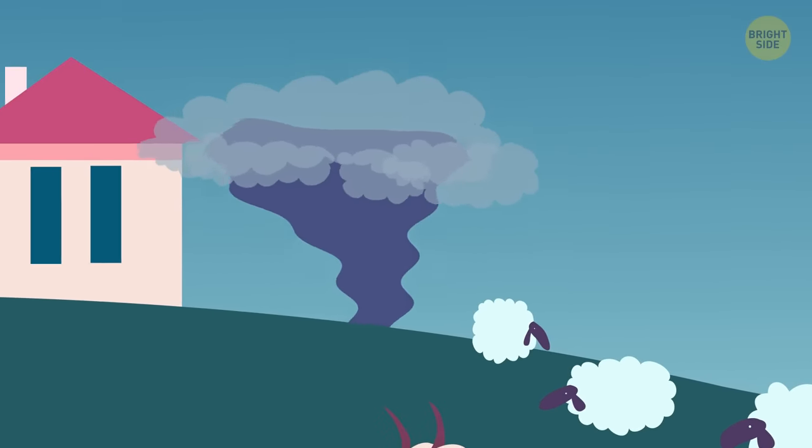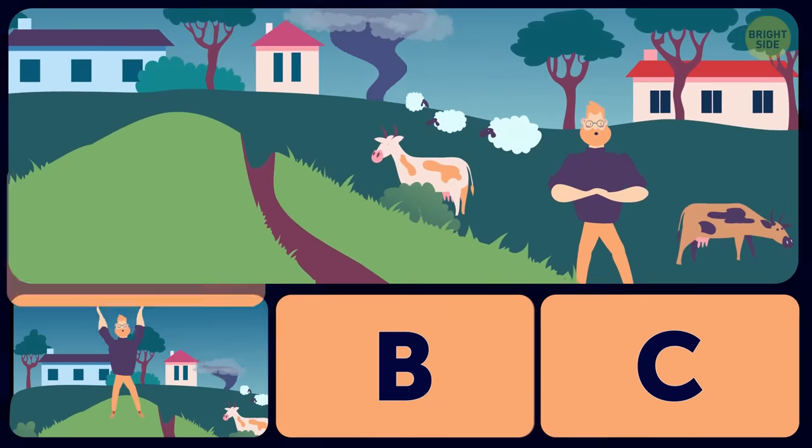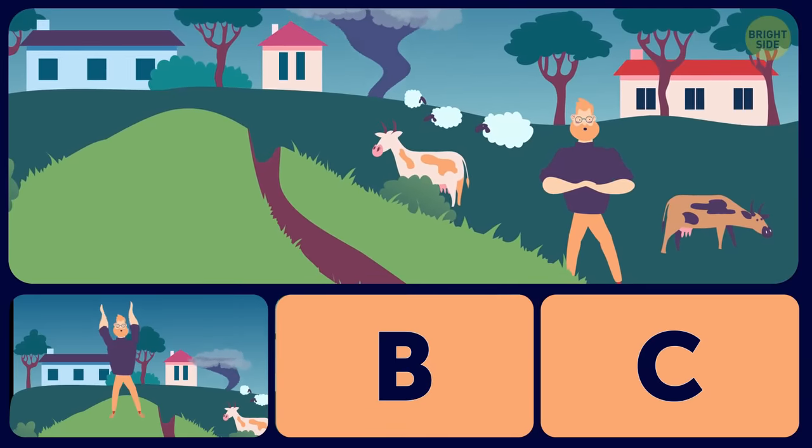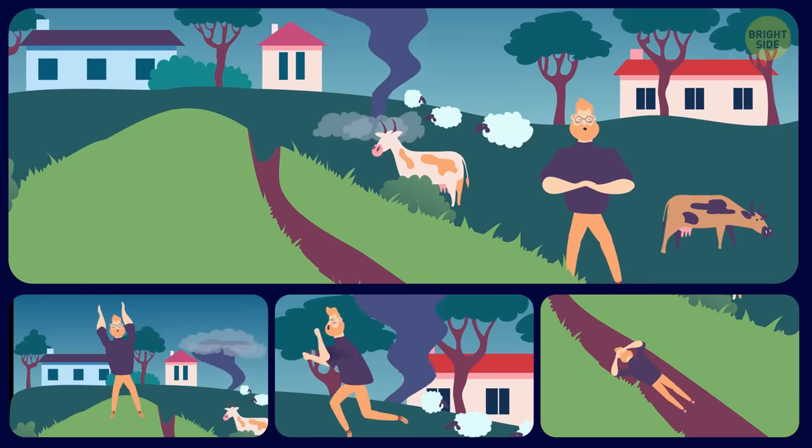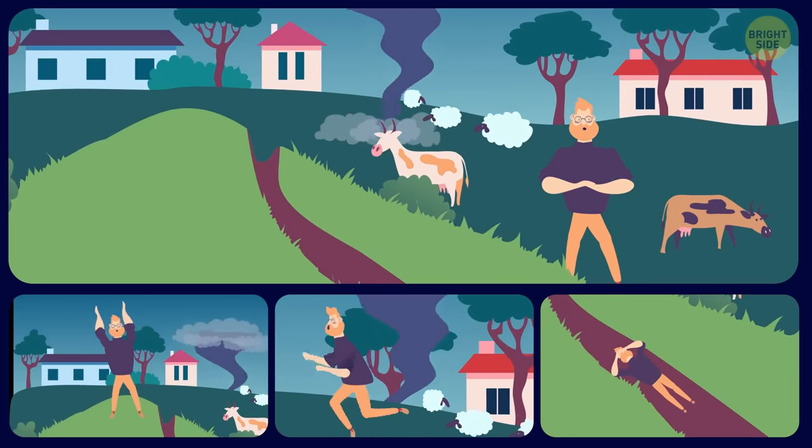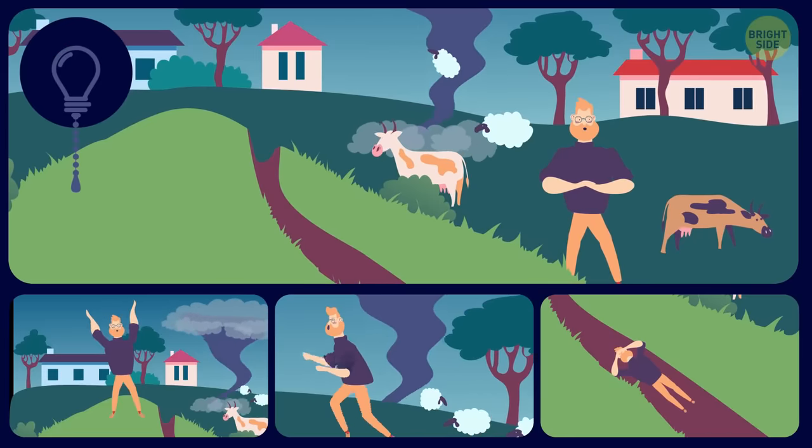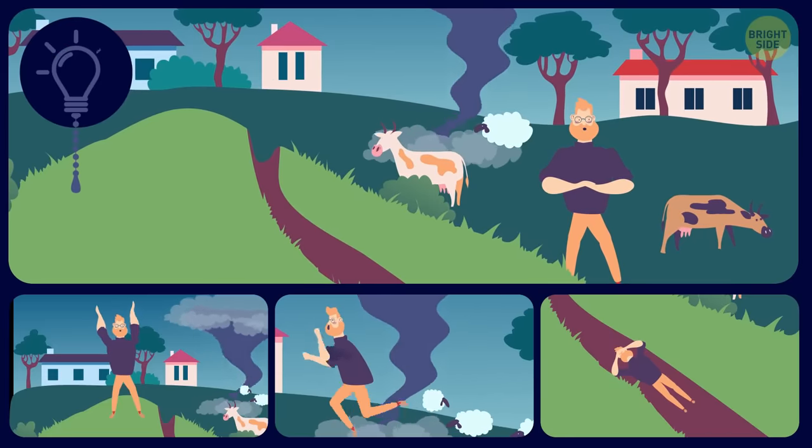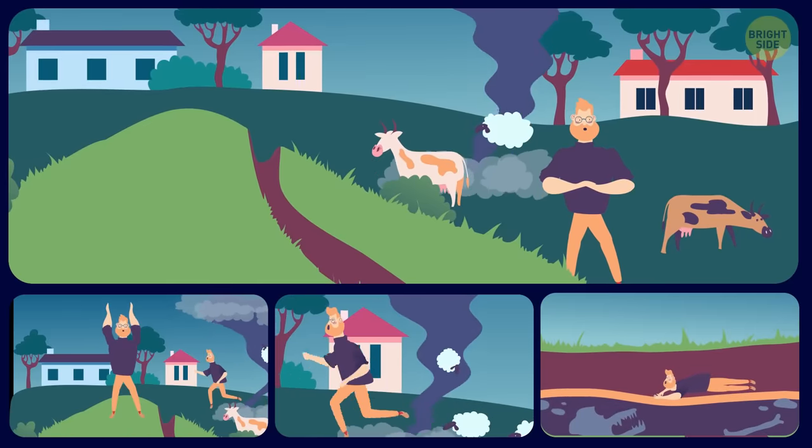2. If you're outside with no shelter in sight and you see a rapidly approaching tornado, do you A. Climb a hill or some other elevation? B. Run away lightning fast? C. Lie down in a ditch and make yourself as flat as you can?